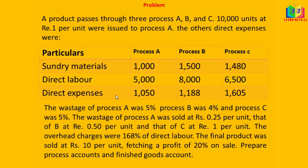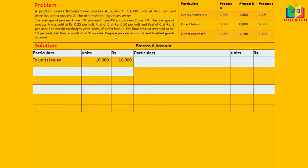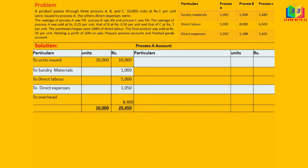Let us see how to do this problem. First, I have entered the units issued: 10,000 units at rupee 1, so the amount column shows 10,000. Then I have written sundry materials, direct labour, and direct expenses. The overhead charges are 168% of direct labour — 168% of 5,000 gives 8,400. We have now finished writing everything on the debit side.